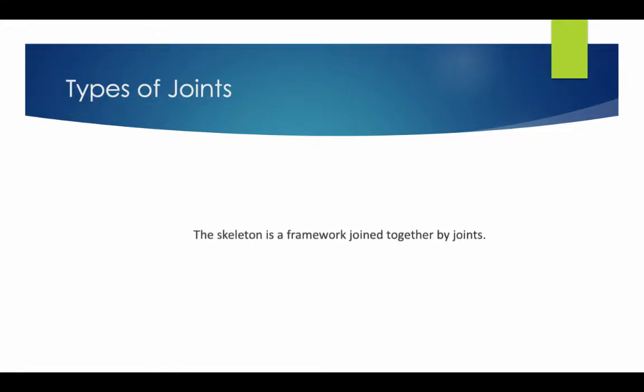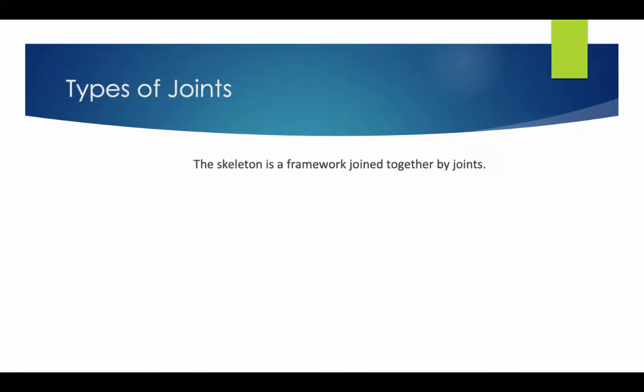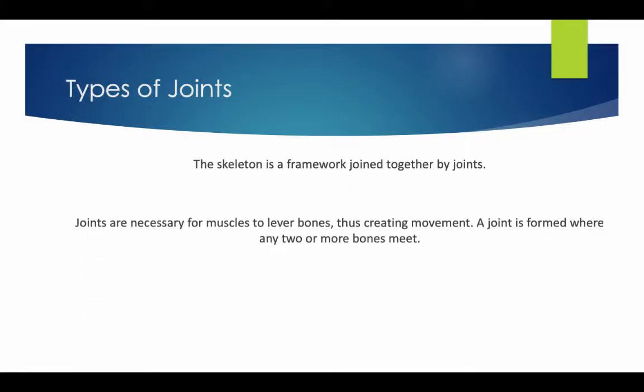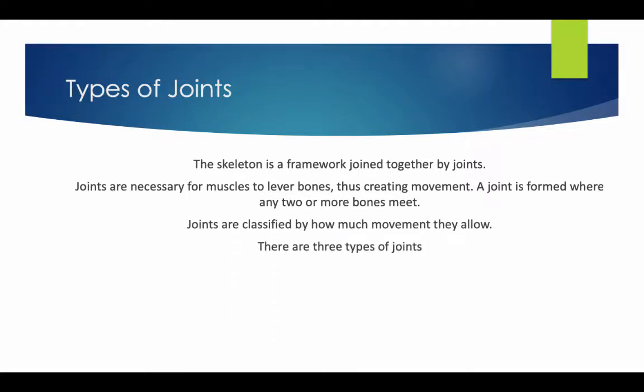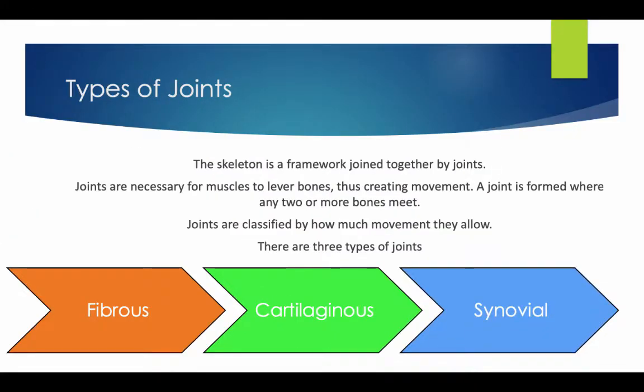The skeleton is a framework joined together by joints. Joints are necessary for muscles to lever bones, thus creating movement. A joint is formed where any two or more bones meet, and joints are classified by how much movement they allow. There are three types of joints: fibrous, cartilaginous, and synovial.